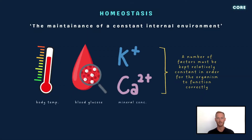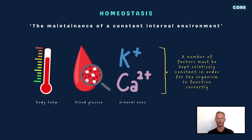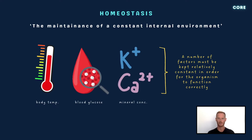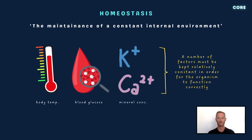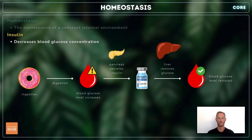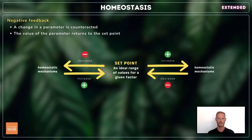Homeostasis is the maintenance of a constant internal environment. The word literally means staying the same and refers to any process organisms use to maintain the stable conditions necessary for survival. For example, whenever we consume carbohydrates, blood glucose concentration increases. In response, the pancreas secretes the hormone insulin, which stimulates the liver to remove glucose from the blood, bringing levels back to within a normal range. That's everything you need to know for core, so we'll move on now to the extended content.